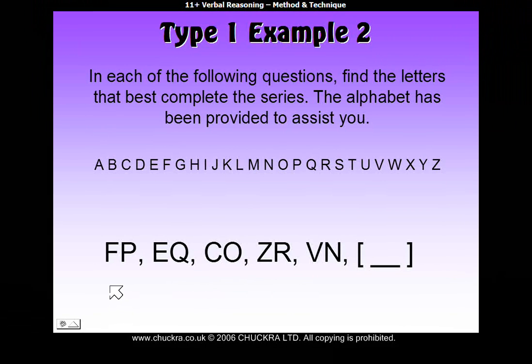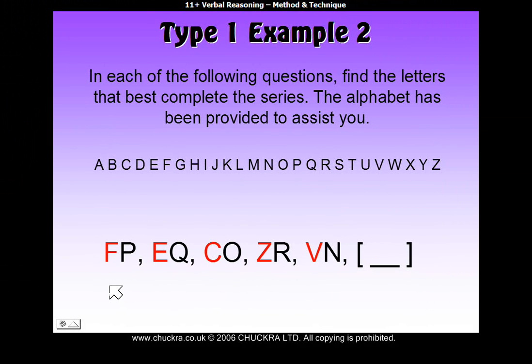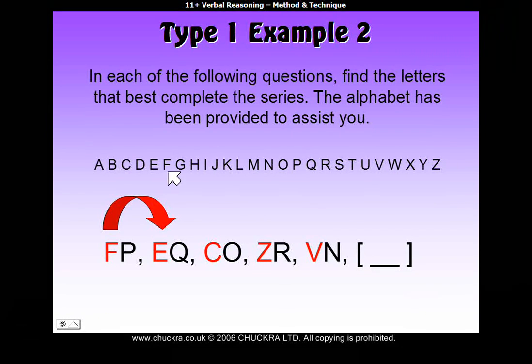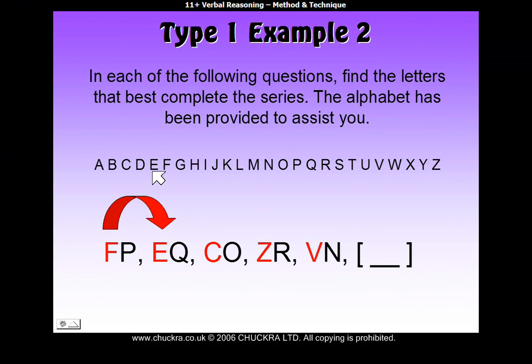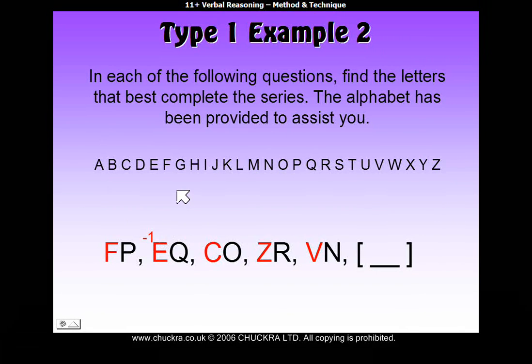So, first, to find out what the pattern is, we look at the first letter in each pair, as we've marked in red here. So, from F to E. Going to our alphabet line, from F, we go backwards one to get to E. So, we can write down minus one.